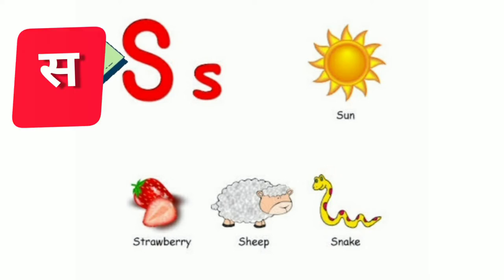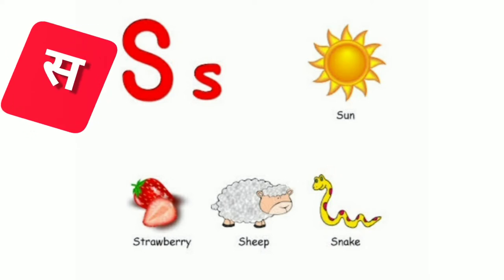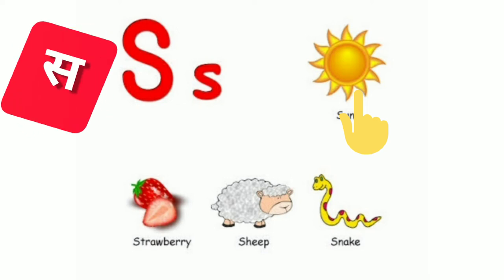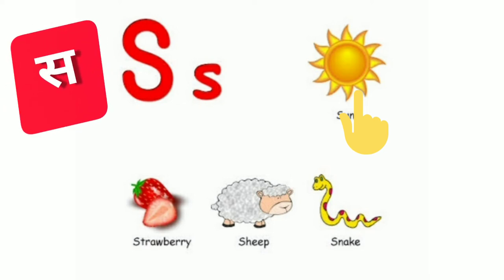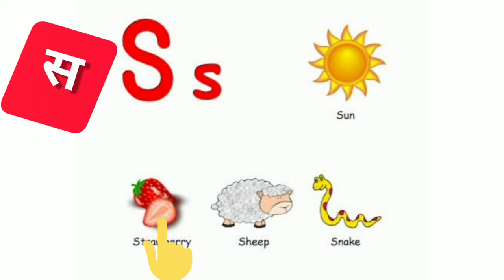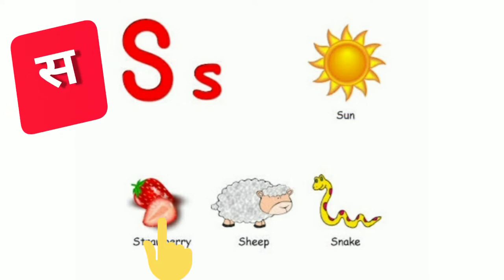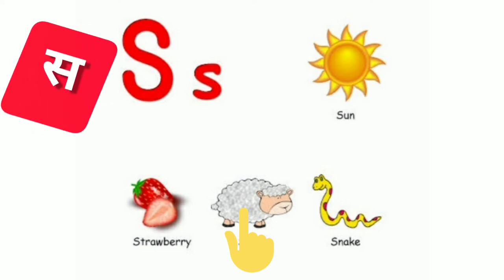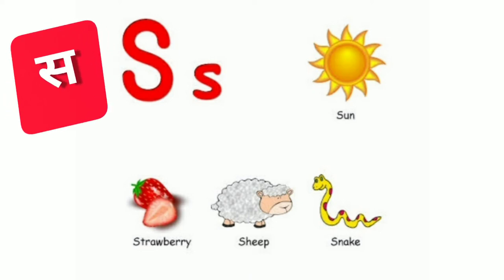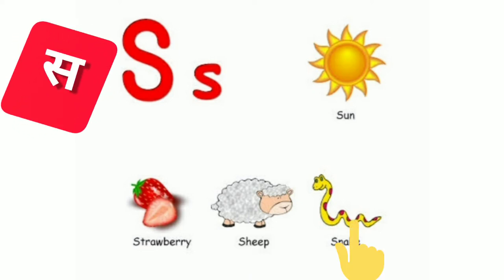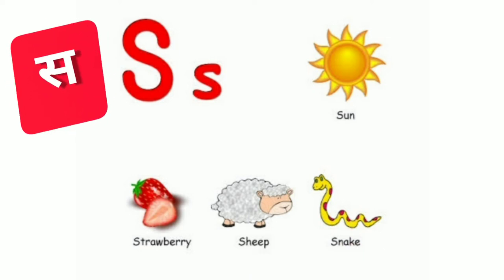Next is S. S sound is S. Sun. Strawberry. Ship. Snake. Is it clear?